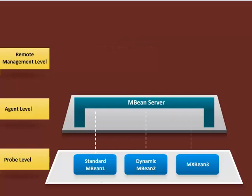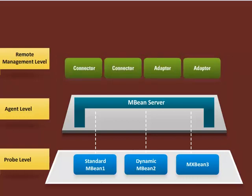The agent level, or the MBean server, is the core of JMX. It acts as an intermediary between MBeans and the applications. The remote management level enables remote applications to access the MBean server through connectors and adapters.